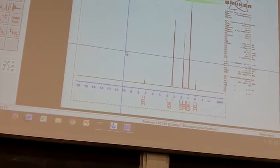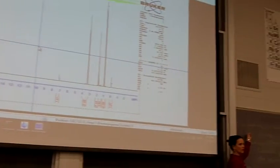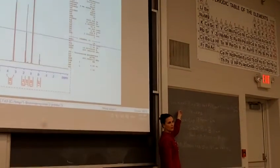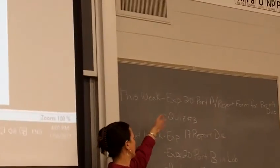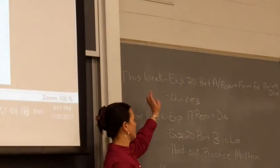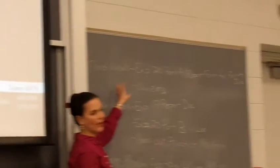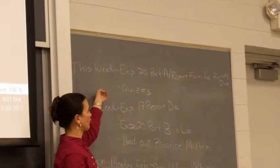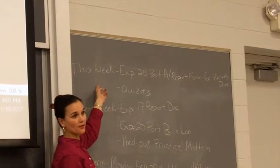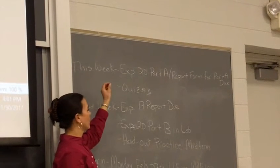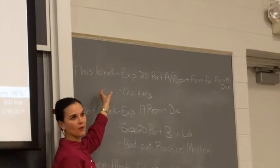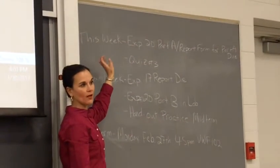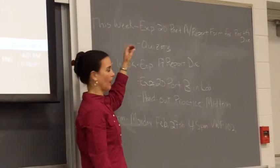This week in lab we will be doing the first part of Experiment 20. It's a three-part experiment with three different reactions. We'll be doing part A in lab this week. Your report form for part A is also due, which I'll talk about here in a little bit. We need to check and make sure that your product A is good enough to go on to part B next week.